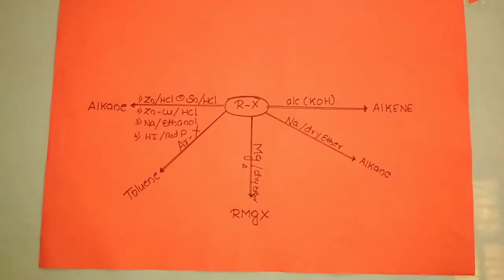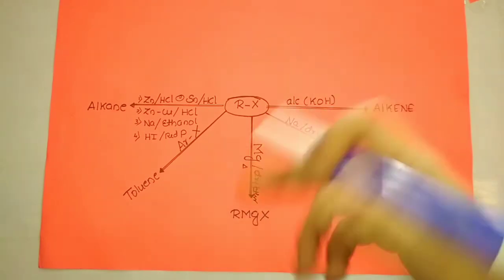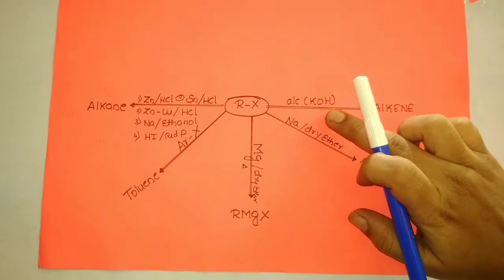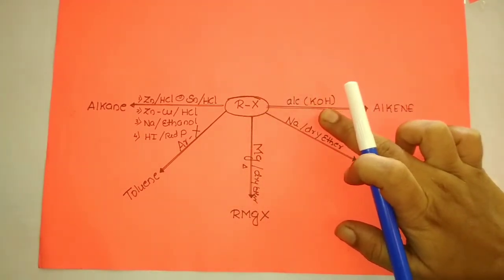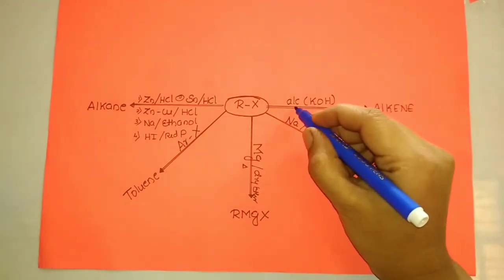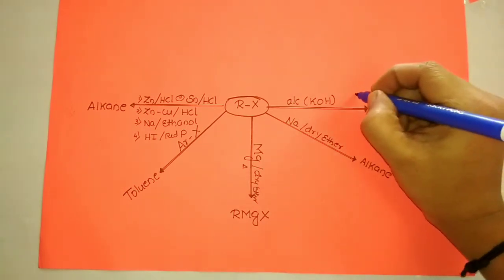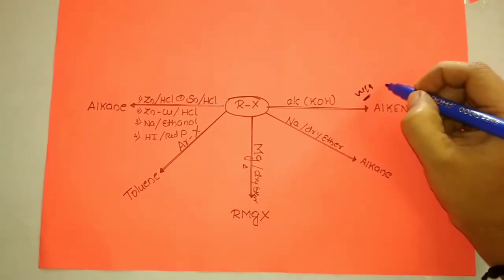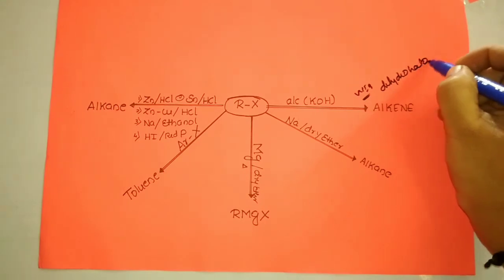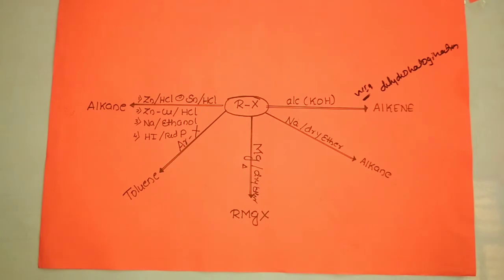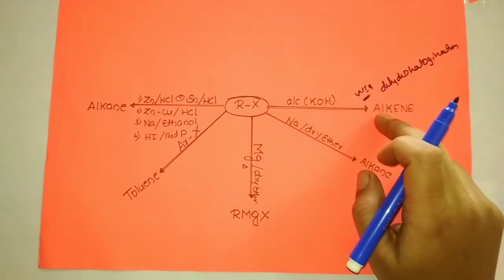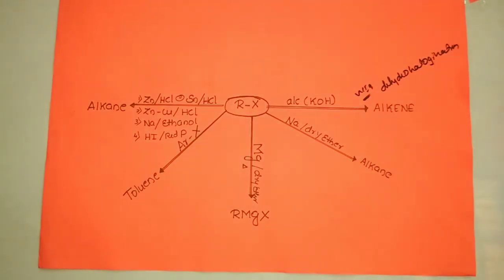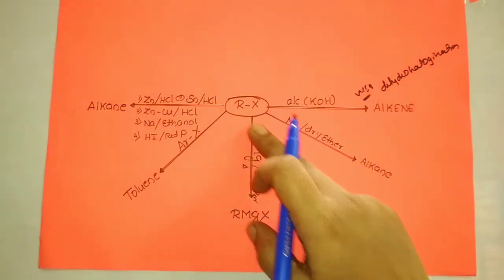When alkyl halide is treated with aqueous potash, the product is alcohol — but when it is treated with alcoholic potash, the product is alkene. This is very important and many questions will appear from this. The process is called dehydrohalogenation and it follows Markovnikov's rule. When alcoholic potash is mentioned, the product is compulsorily alkene.